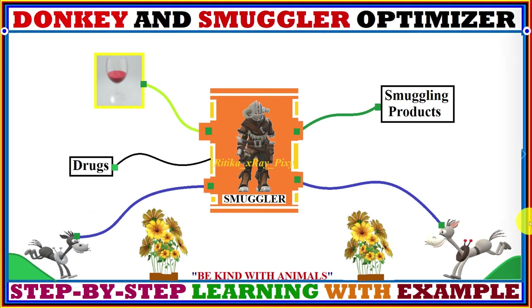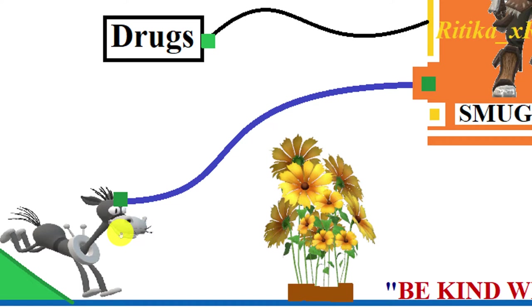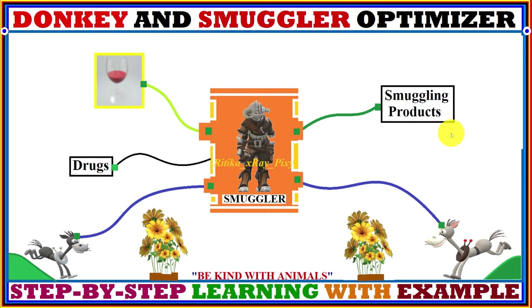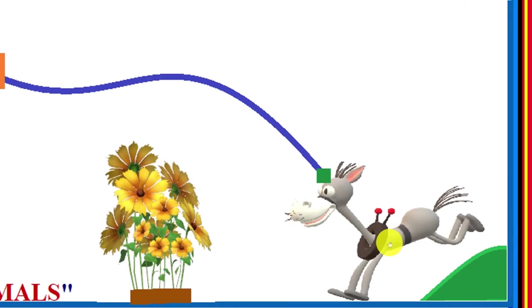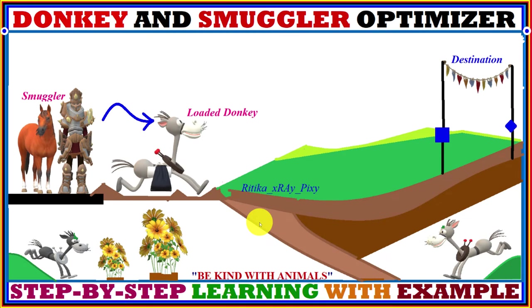Because of these qualities, the donkey is the best animal for smugglers to conduct their business. Smugglers use donkeys to deliver their smuggling products — for example, drugs, liquor, and other smuggling products — from one source to a destination or across borders. Since donkeys can remember routes, they can travel without the smuggler's guidance.